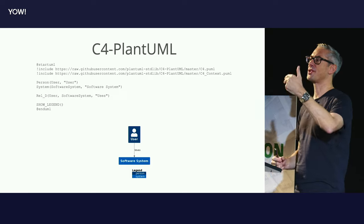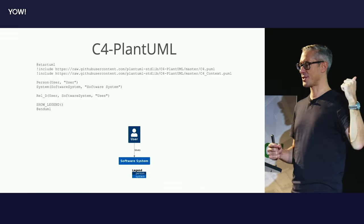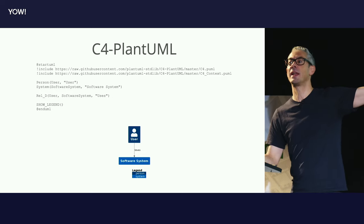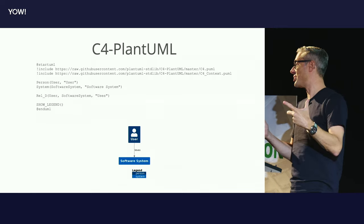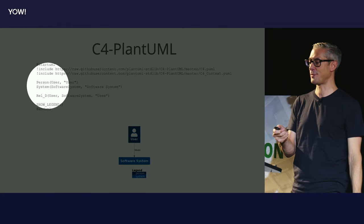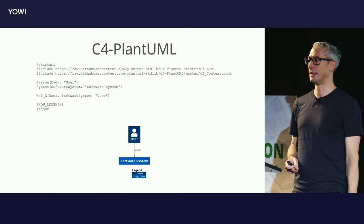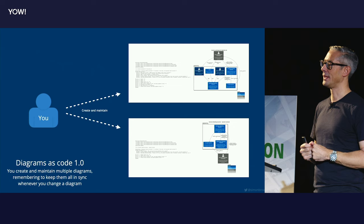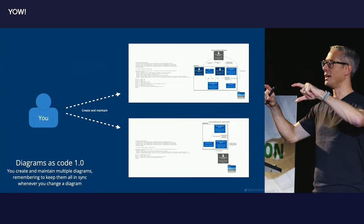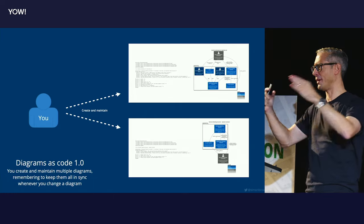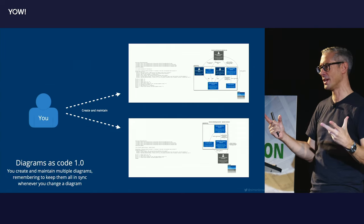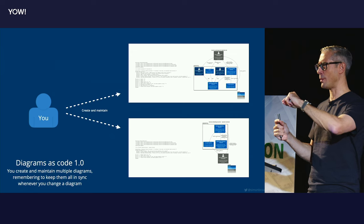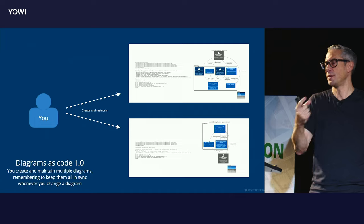The one people generally stumble upon first when looking for diagrams as code plus C4 is something called C4 PlantUML — a set of macros for the PlantUML tooling that gives you a C4 domain-specific language to craft up an architecture diagram. Here's an example: we have a person, a software system, and a relationship, and this little bit of text gives you that picture. But if you want to create a container diagram — a second diagram — you now have to have a second text file. There are some limited abilities to do includes, but it doesn't work as well as it should. We can use global search and replace in our IDEs to make sure when we rename something we rename it everywhere, but that's error-prone.